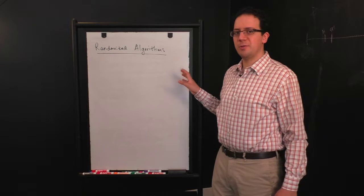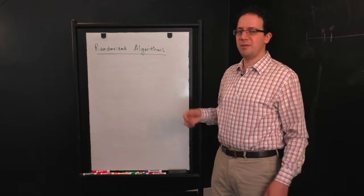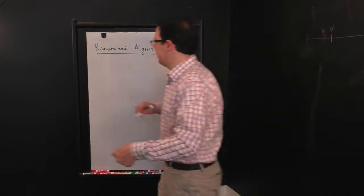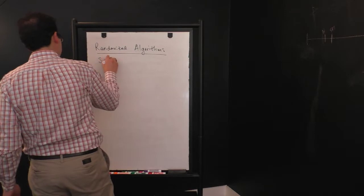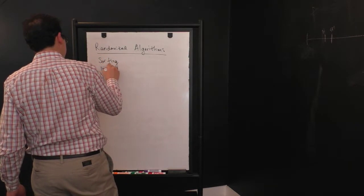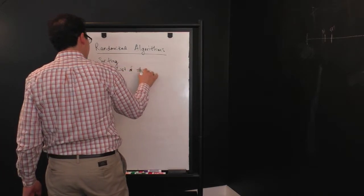Many randomized algorithms tend to be simpler than the simplest known deterministic analog. And I want to show you a couple examples of that. So we're going to start with sorting again. So just to recall the input here will be a list, let's just say for simplicity,